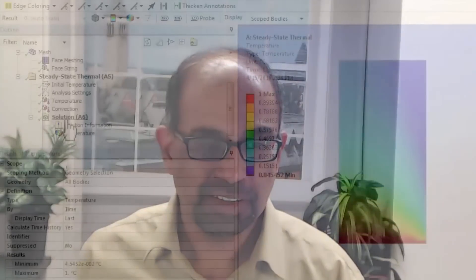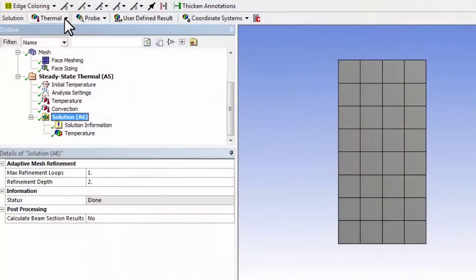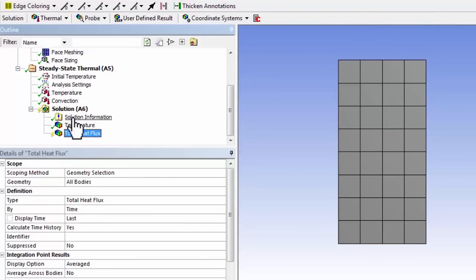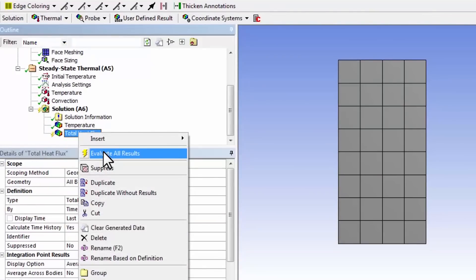Next, let's take a look at the heat flux. Highlight solution in the tree, thermal total heat flux, right-click and say evaluate all results.